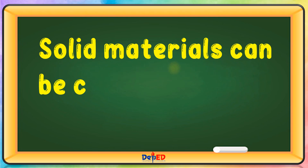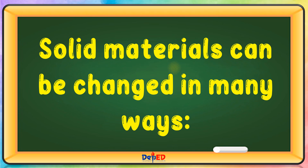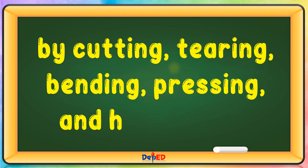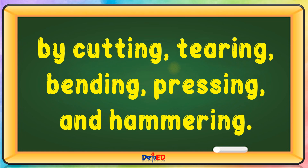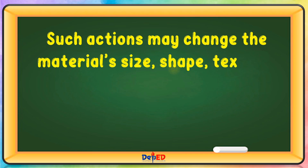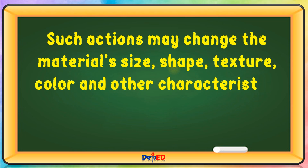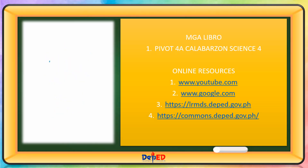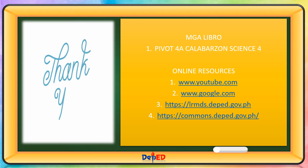Solid materials can be changed in many ways — by cutting, tearing, bending, pressing, and hammering. Such actions may change the material's size, shape, texture, color, and other characteristics or properties, but no new material is formed. Thank you for watching. Till our next science lesson. Goodbye.